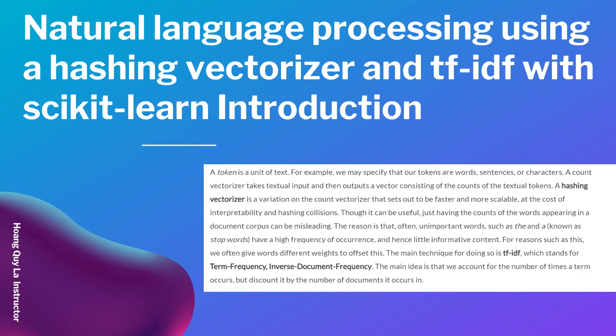A token is a unit of text — for example, we may specify that our tokens are words, sentences, or characters. A count vectorizer takes textual input and outputs a vector consisting of the counts of the textual tokens. A hashing vectorizer is a variation on the count vectorizer that aims to be faster and more scalable, at the cost of interpretability.